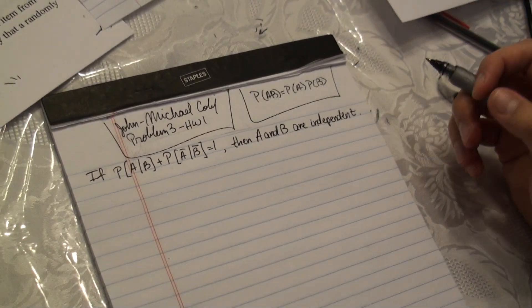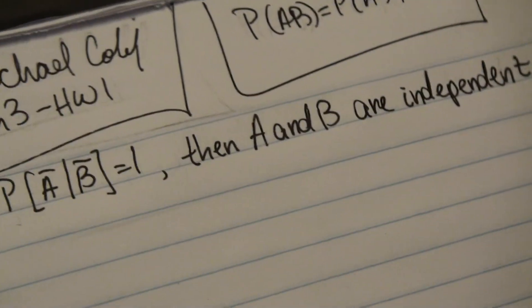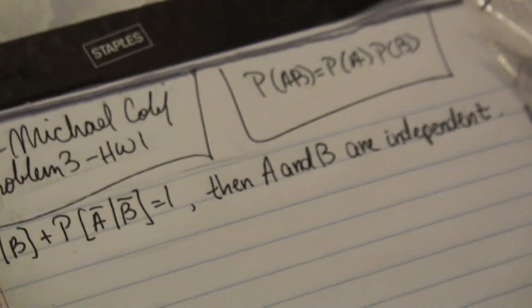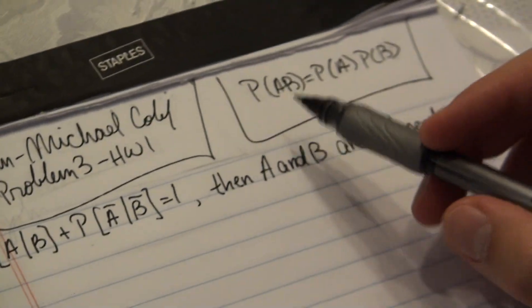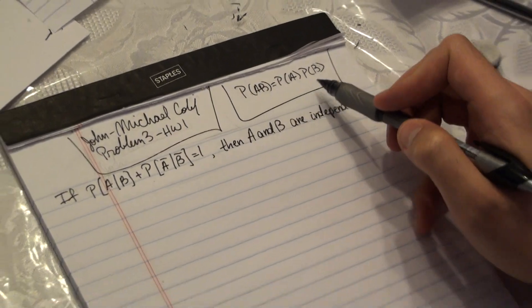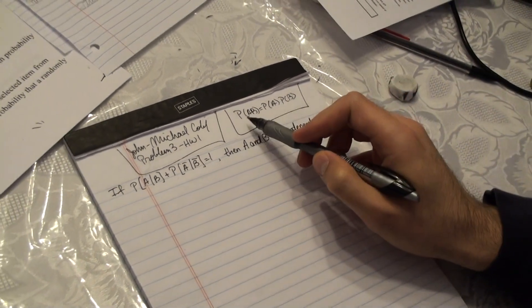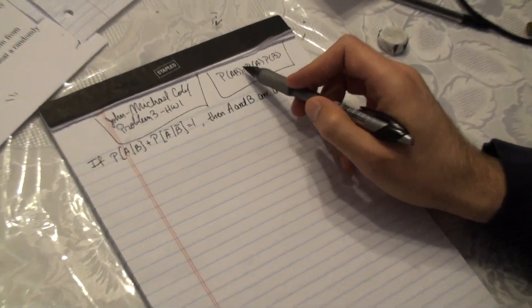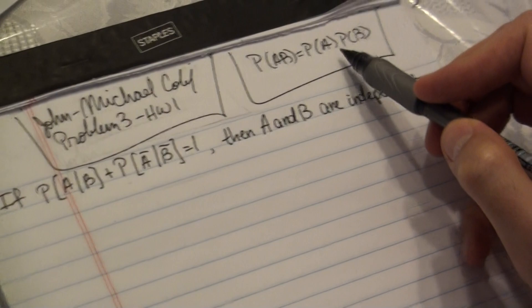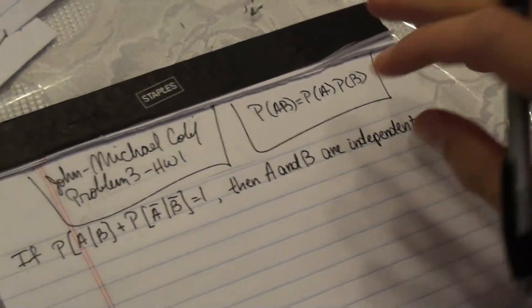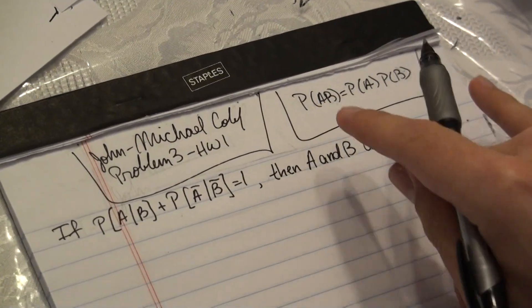Before we even start, let's remind ourselves what does it mean for A and B to be independent. For A and B to be independent, it needs to satisfy this: the probability of AB must be equal to the probability of A times the probability of B. This is essentially what we have to show.